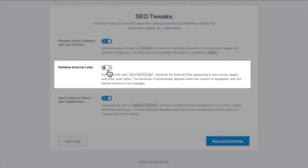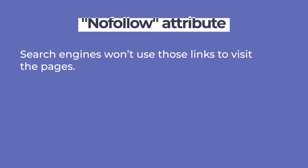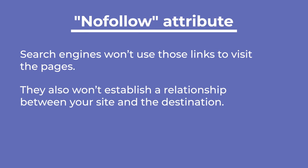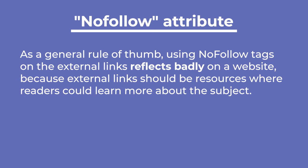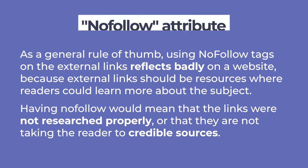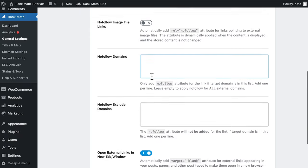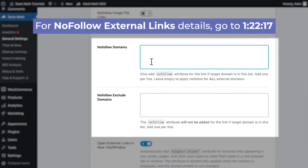The second, No Follow External Links, adds the No Follow meta tag to other websites. This tag tells search engines not to visit the pages or establish any relationship between your site and the destination. As a general rule of thumb, using No Follow tags on external links reflects badly on a website, because external links should be resources where readers could learn more about the subject. We recommend using No Follow only for affiliate links, which we will learn how to do in the general settings section of this video.